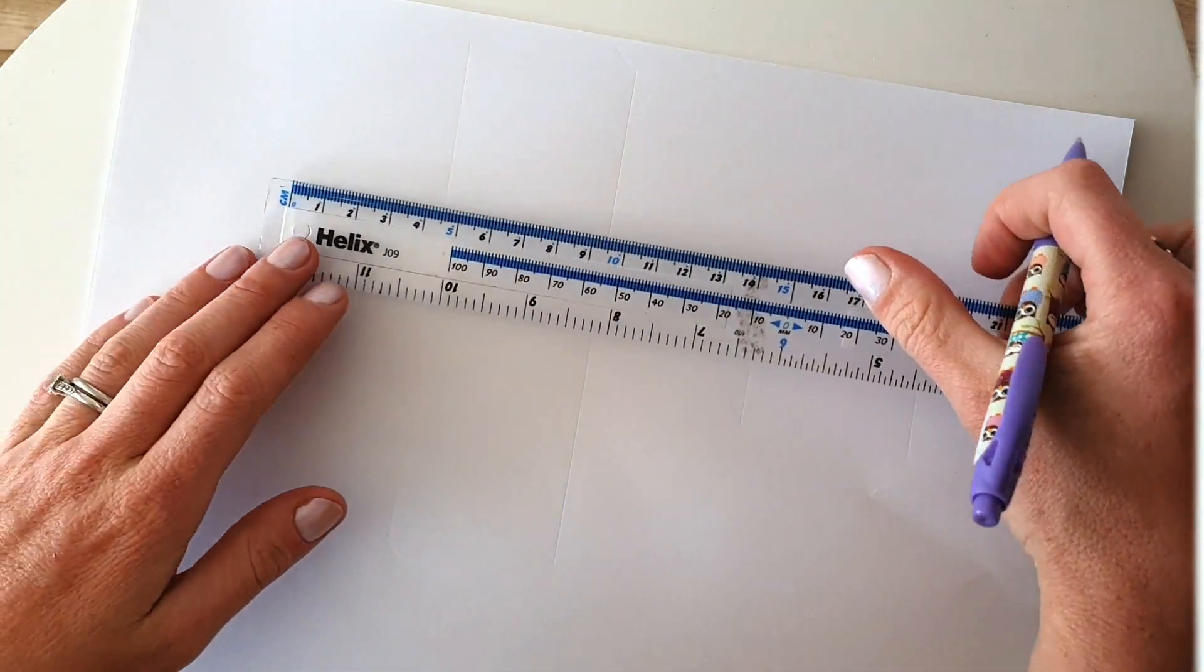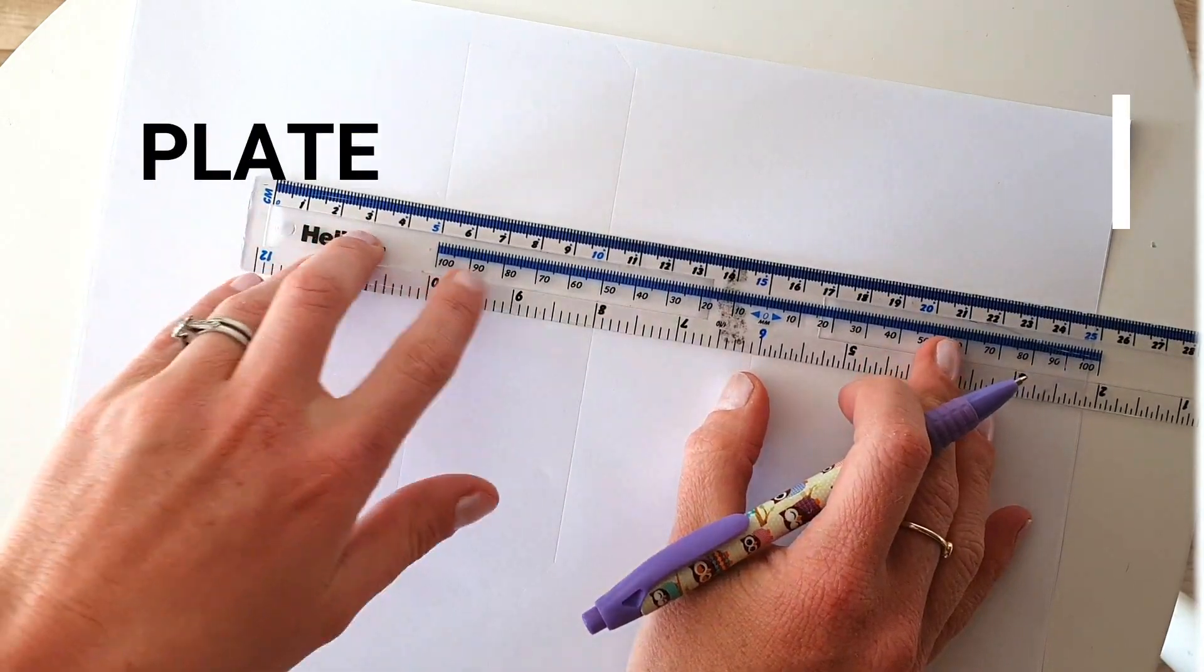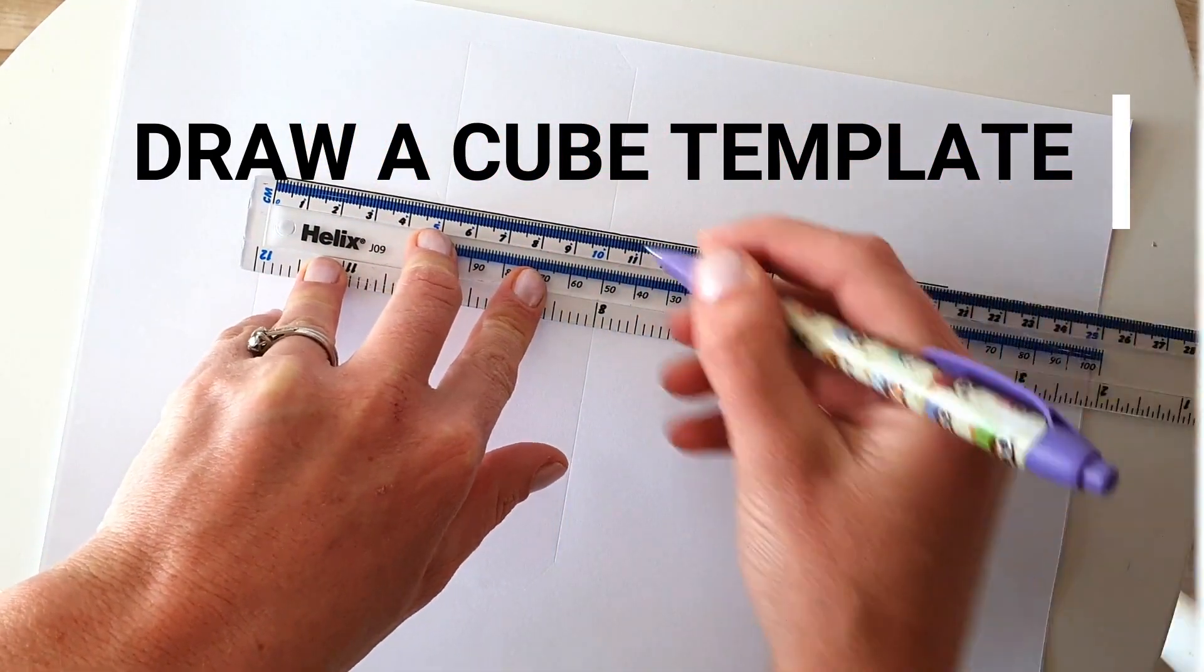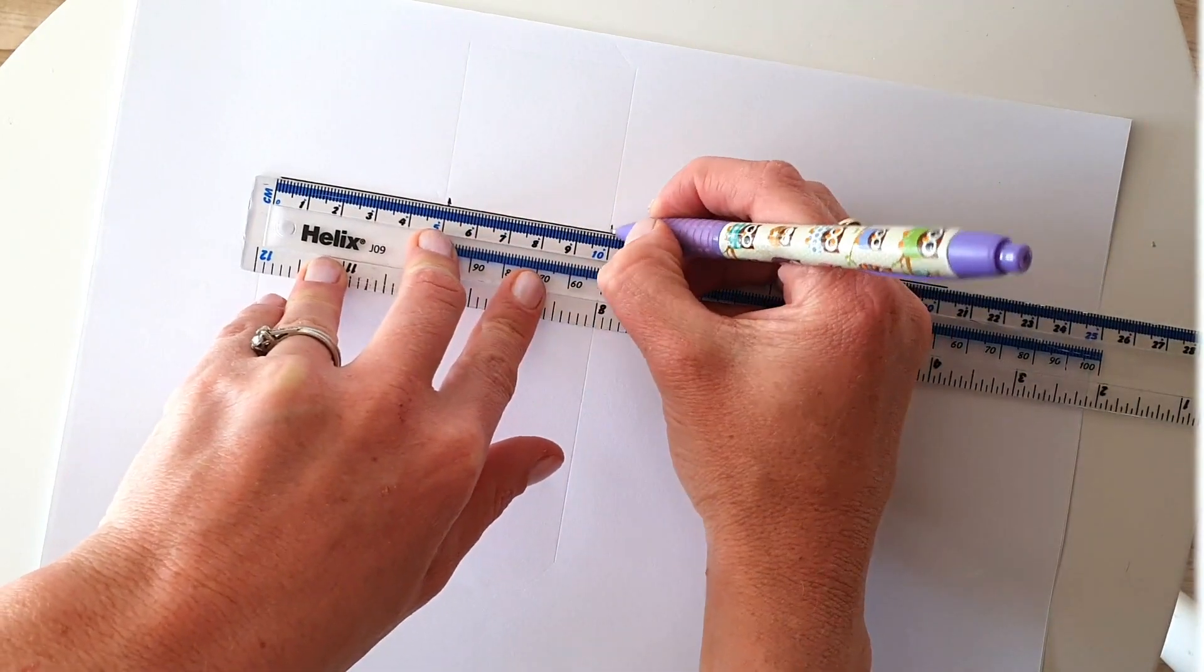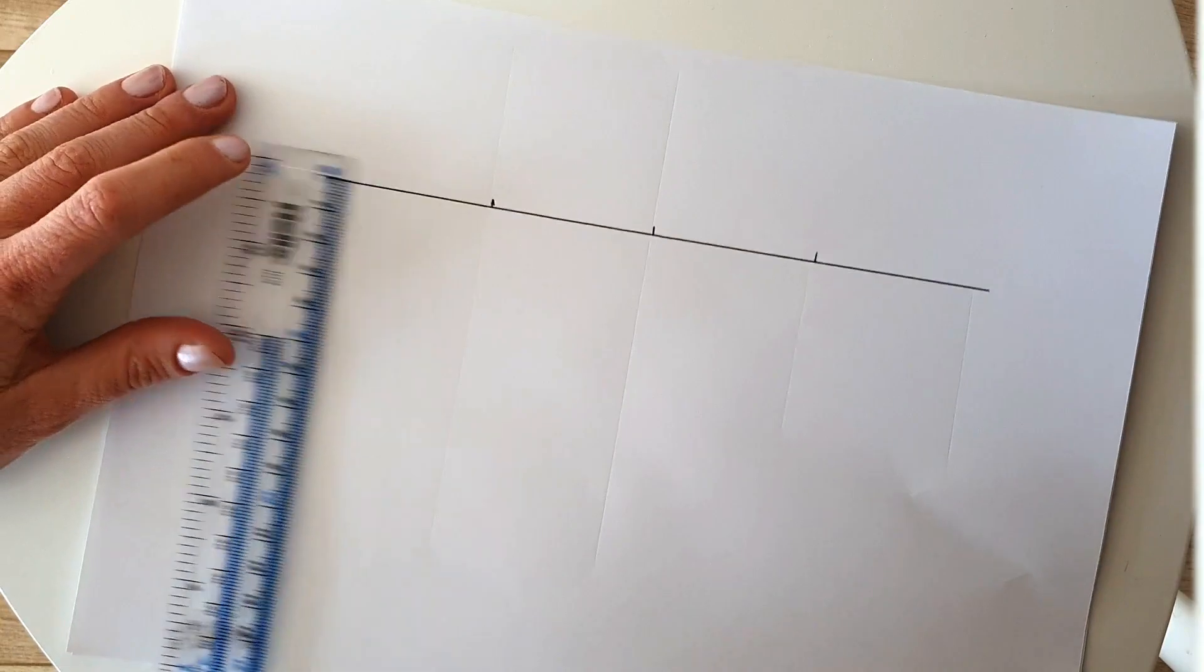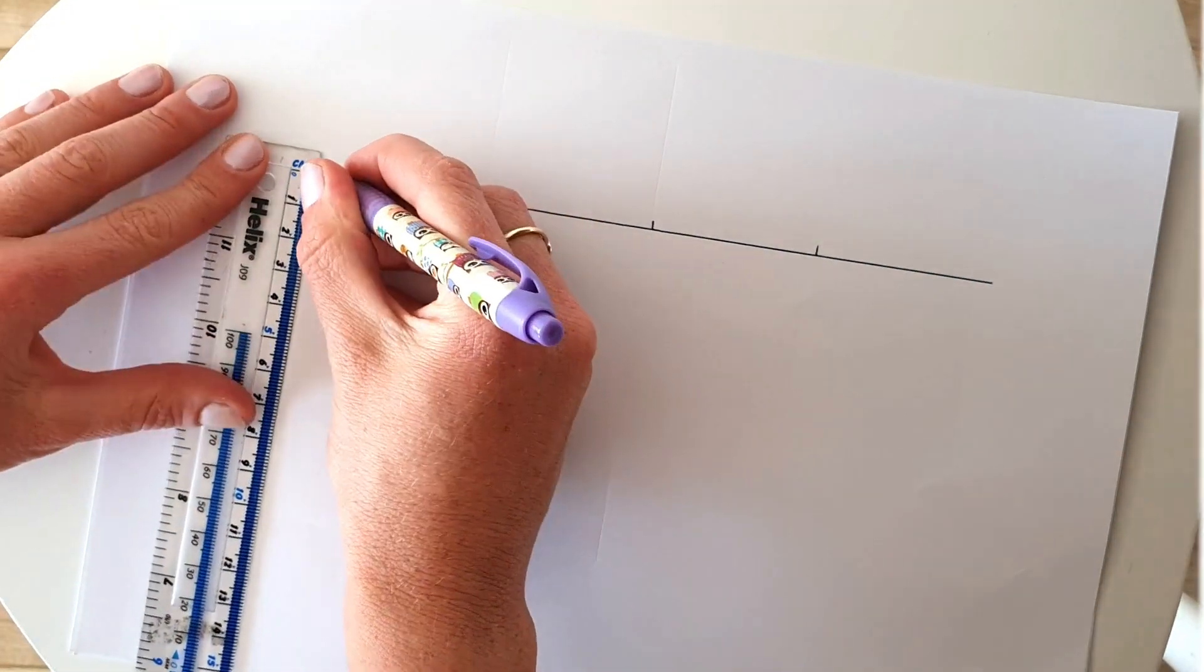Okay, so to draw a basic story cube, you are going to do a 20 centimeter line and just mark that up in five centimeter pieces. And you're going to do it by five centimeters.